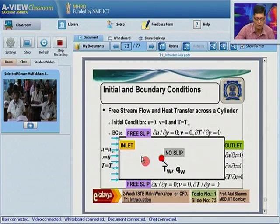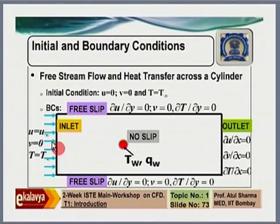Is this a flow over a cylinder or is it a pipe? It is a solid cylinder. We are taking a two-dimensional flow and the length of this cylinder perpendicular to this plane is infinite. It is an external flow, not an internal flow — external flow across a circular solid cylinder.